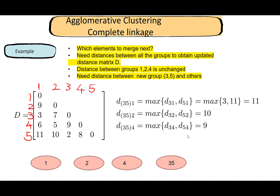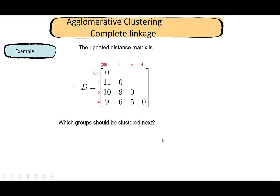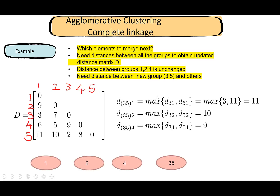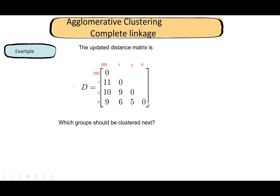We update the distance matrix to reflect the new grouping structure. Now we're ready to group again. Even though we used a maximum for computing distances within complete linkage, when looking at the distance matrix to decide which clusters to merge next, we always look for the minimum element — we're always merging clusters that are closest to each other.